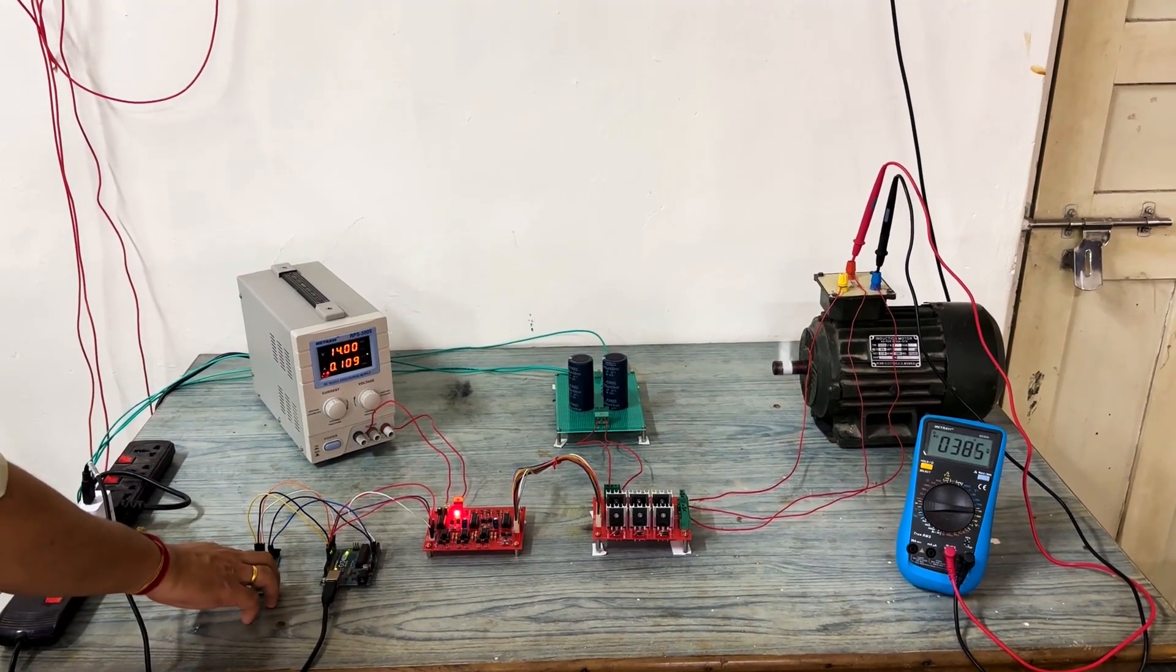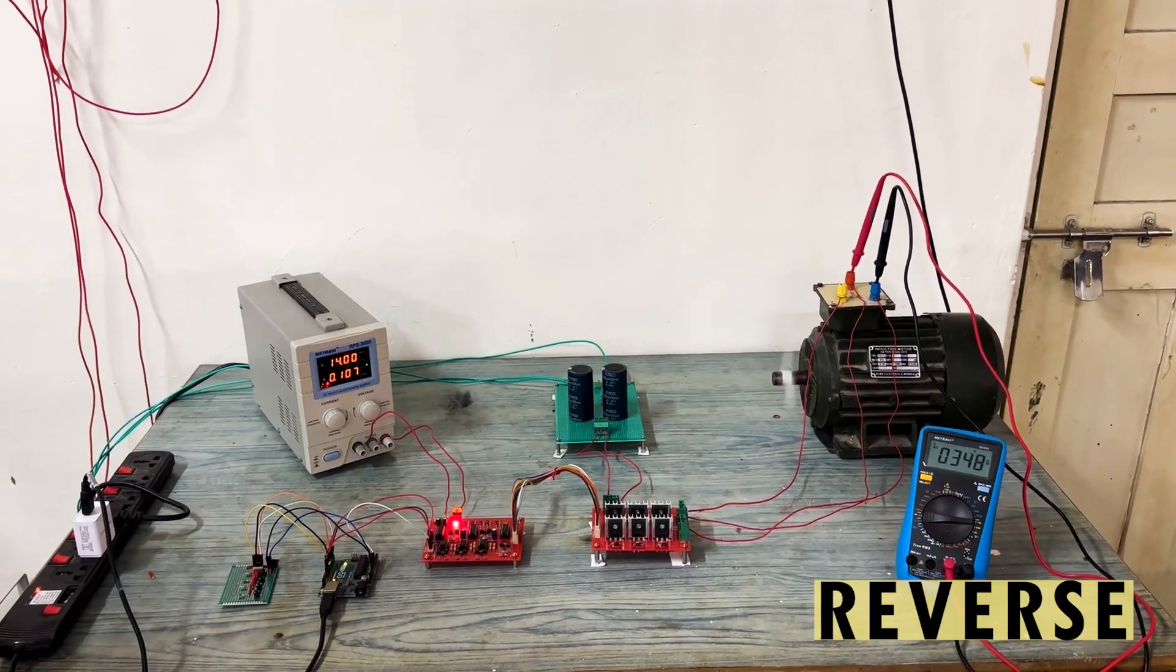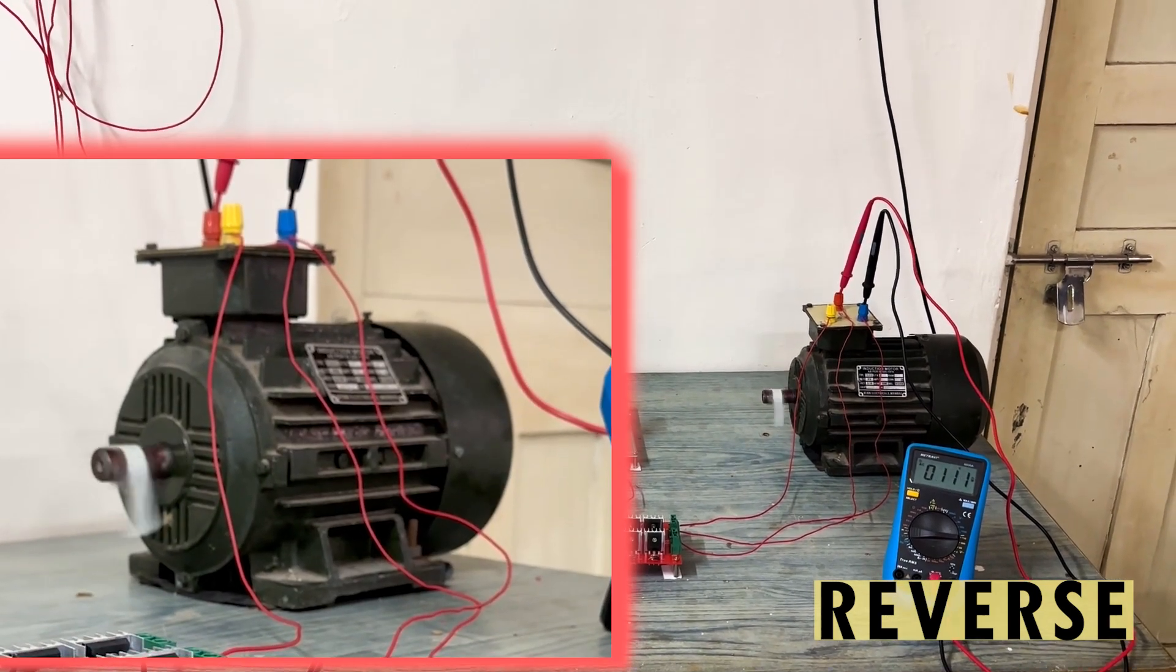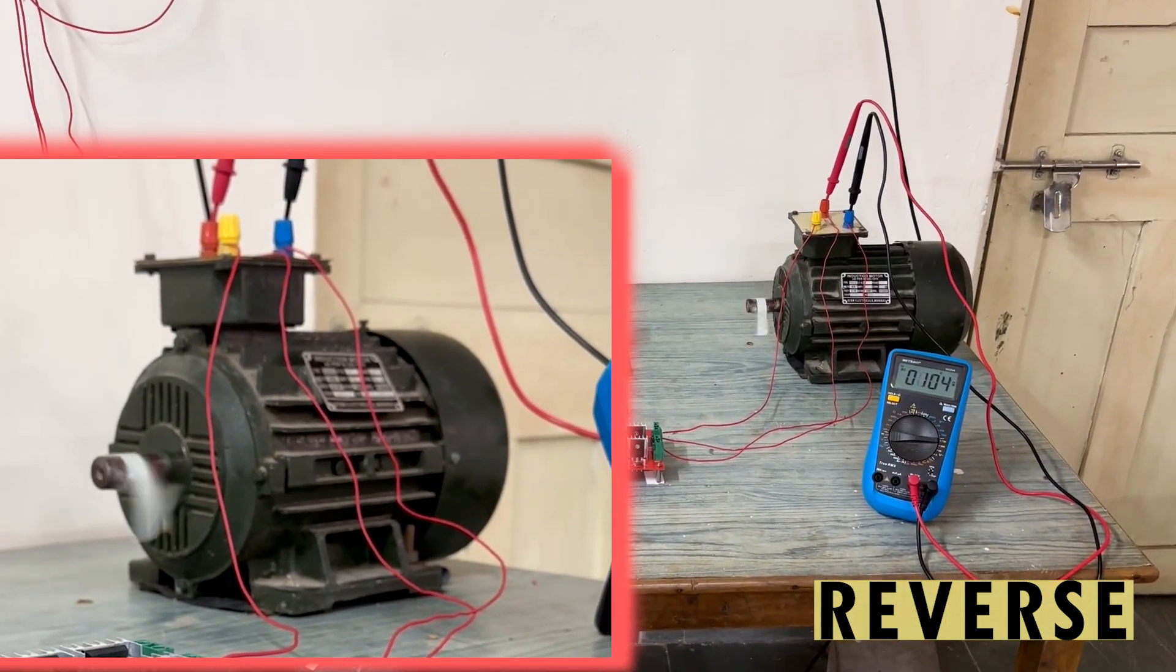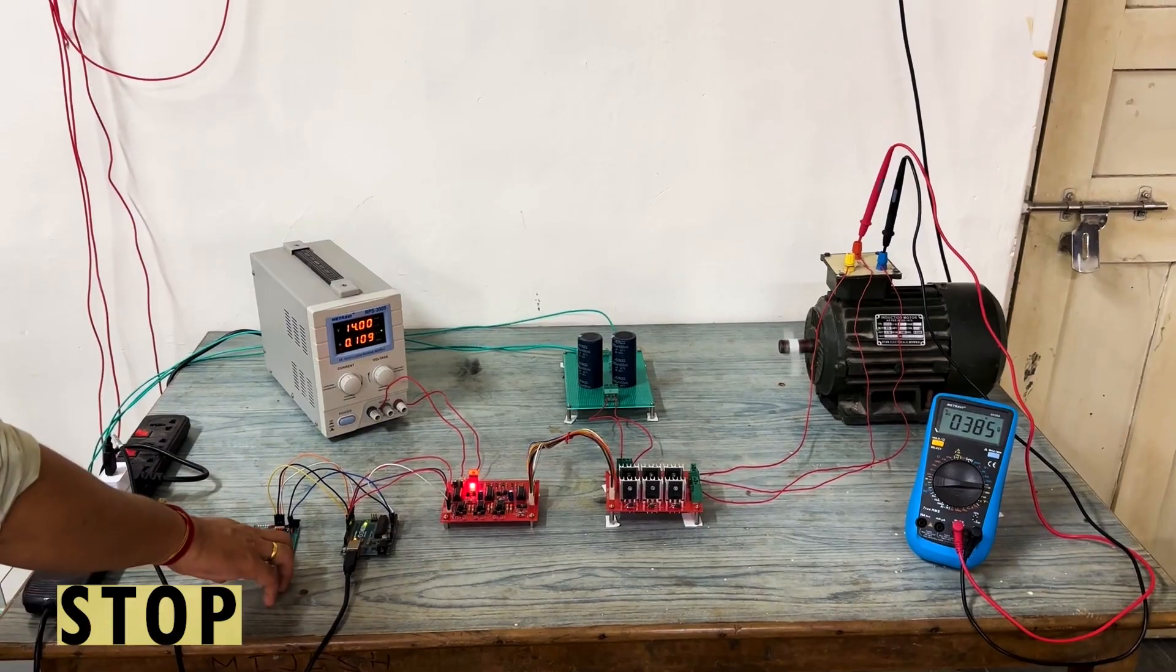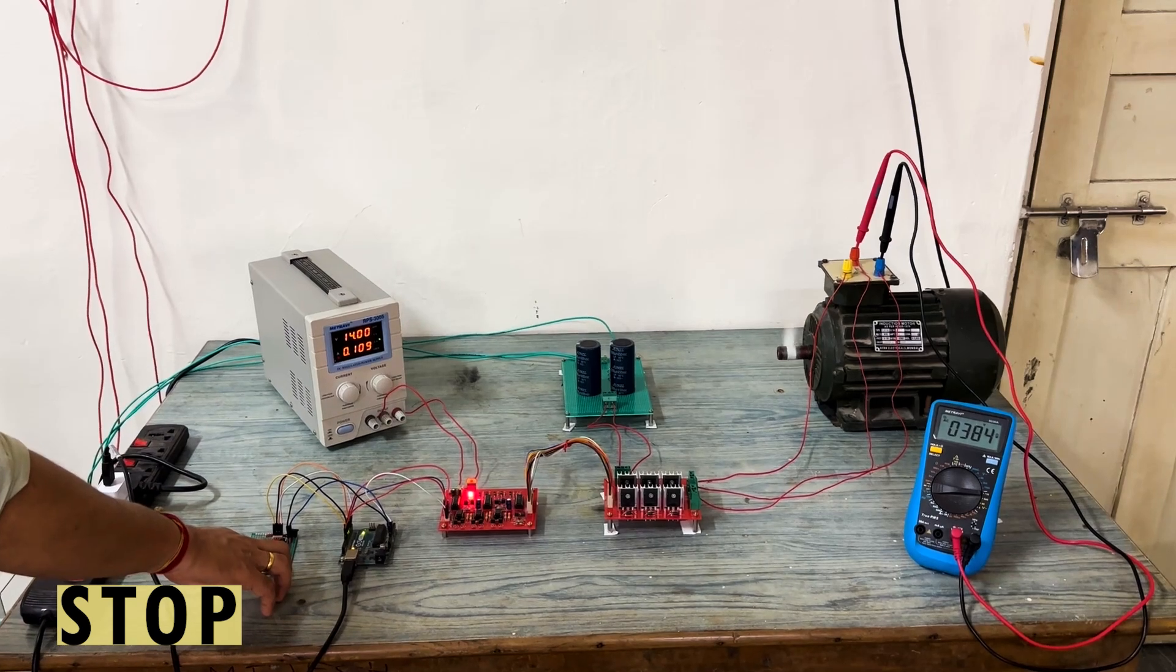Now press to reverse the motor direction. The motor will slowly come to a halt and then start to rotate in the reverse direction. Finally, we press the fourth button to stop the motor.